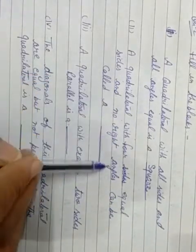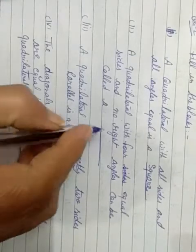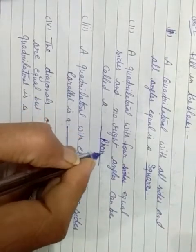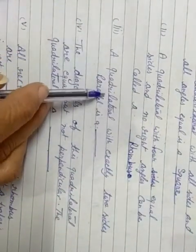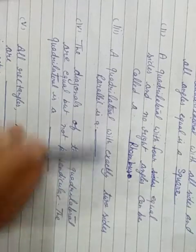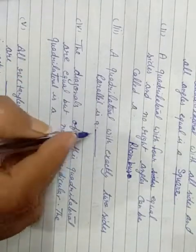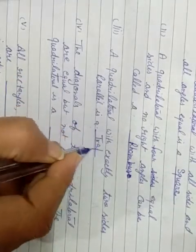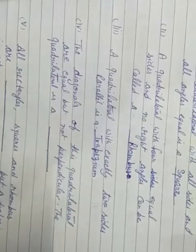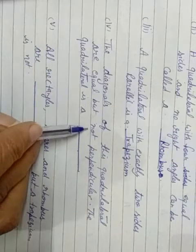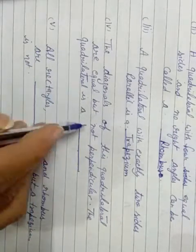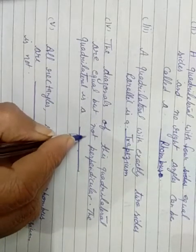A quadrilateral with 4 equal sides and no right angle can be called a rhombus. A quadrilateral with exactly 2 sides parallel is a trapezium. The diagonals of this quadrilateral are equal but not perpendicular — the quadrilateral is a rectangle.